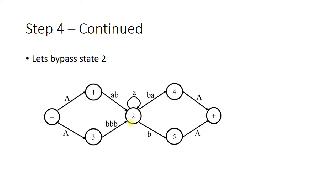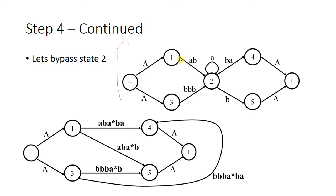Next we have another example of state elimination. We have to eliminate a given state, so we find all possible paths from states 1, 4, and 5. From state 1, there are two paths: one from 1 to 2 to 4, and one from 1 to 2 to 5. For the path 1, 2, 4 we get A, B then Kleene star of A (because it is a loop), then B, A — giving an edge from 1 to 4.